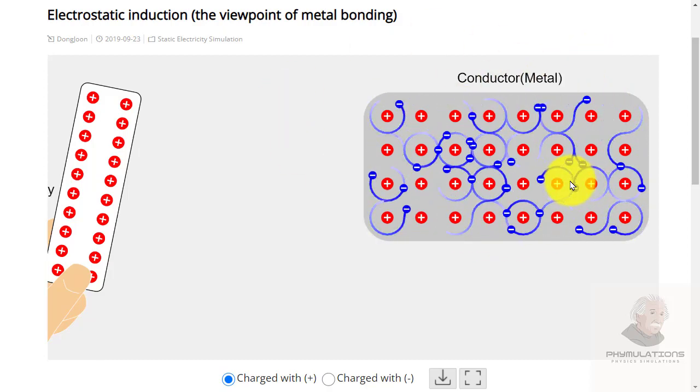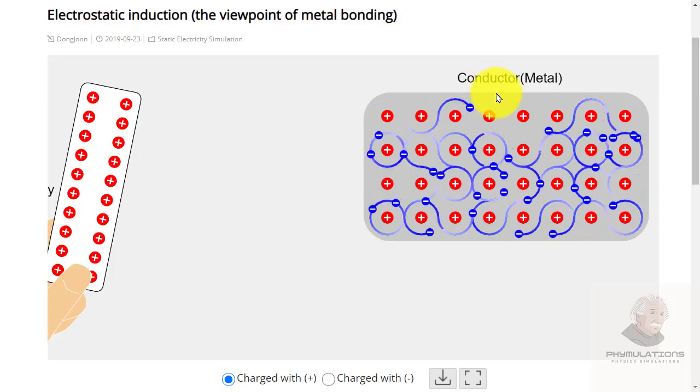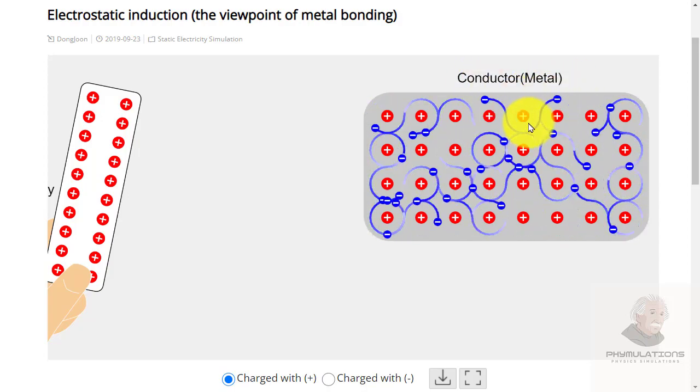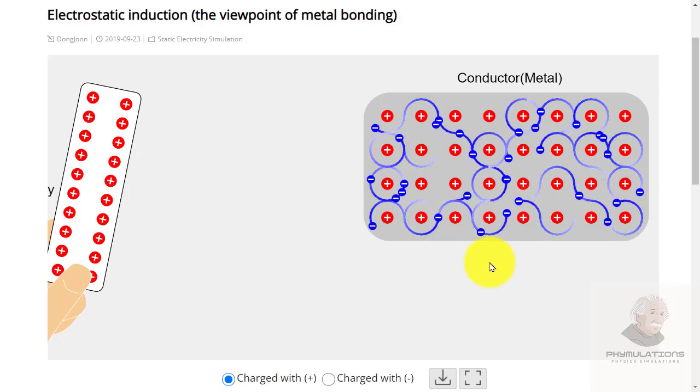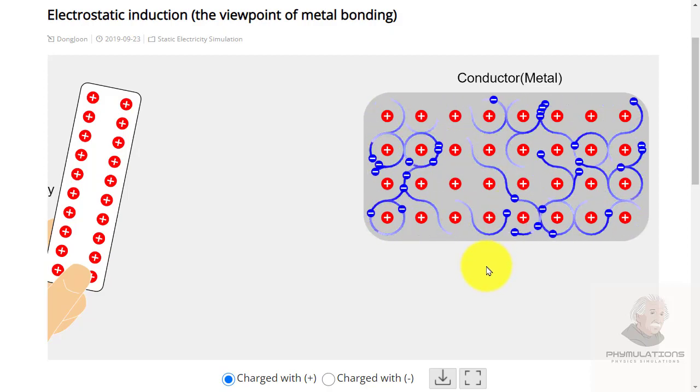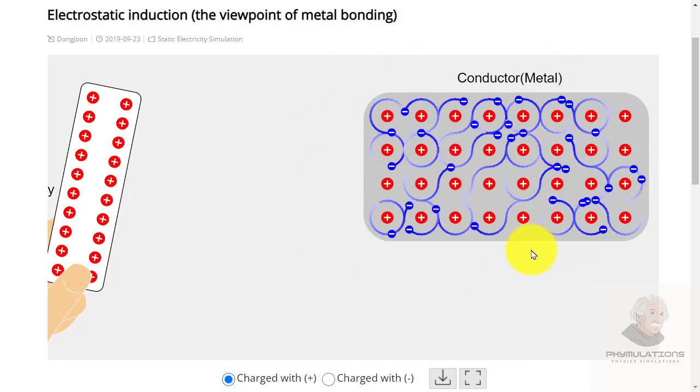You can observe here in this diagram that it's a piece of conductor, a piece of metal. You all know that electrons keep on randomly moving inside a metal, inside a conductor.